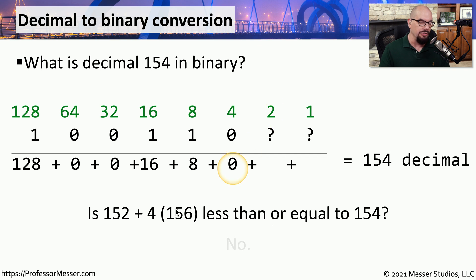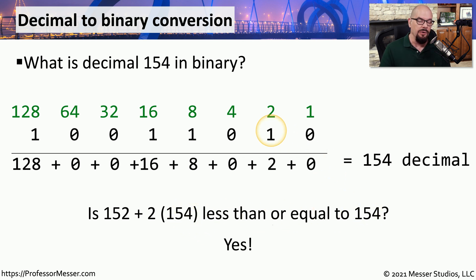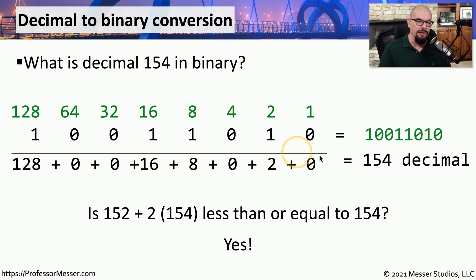Next is the number 2. Is 152 plus 2 less than or equal to 154? That is equal to 154, so we put a 1 in that slot and bring down the 2. Since it's now equal to the number we were looking for, we know the 1 slot can't be used. Therefore, 154 decimal is equal to the binary value of 10011010.